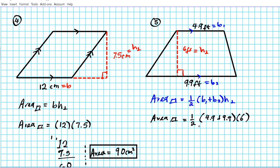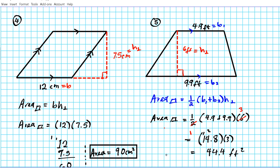The area of our trapezoid is going to be one half of (4.9 plus 9.9) multiplied by 6. We can divide 6 by 2 to get 3, following order of operations, adding the parentheses first: 9 plus 9 is 18, carry 1; 4 plus 9 is 13 plus the 1 is 14 — so 14.8 multiplied by 3. Then 3 times 8 is 24, carry 2; 3 times 4 is 12 plus 2 is 14, carry 1; 3 times 1 is 3 plus 1 is 4. There is one digit to the right of the decimal, so the answer is 44.4 feet squared — that is the area of our trapezoid.